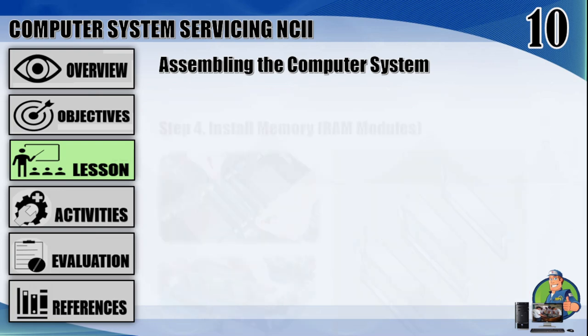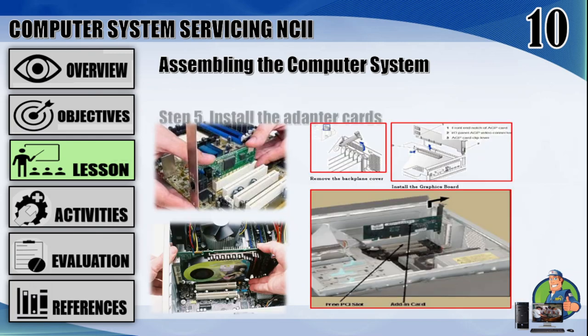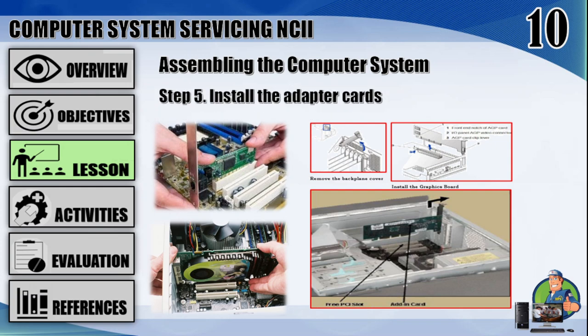Step 4: install memory modules or RAM modules — in order to install the memory modules, insert them into the proper sockets and push down firmly but evenly until the clips on both sides of the socket pop into place. Step 5: install the adapter cards — install the internal cards to their sockets. Carefully position the card above the slot and press down firmly to seat the card. Secure the card with a screw.